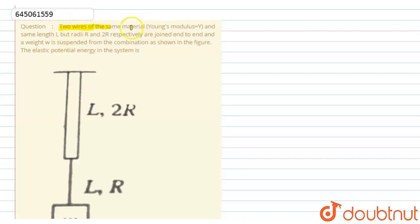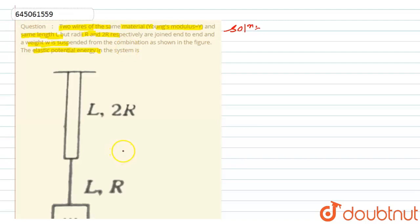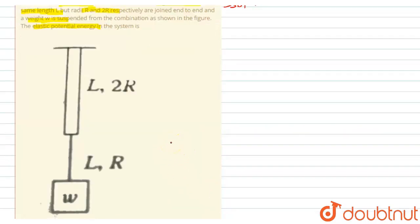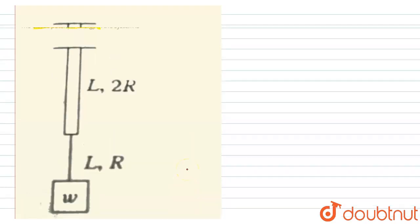In this question, we have two wires of the same material — Young's modulus Y — and same length L, but with radii r and 2r respectively. They are joined end to end, and a weight W is suspended from the combination as shown in the figure. We need to find the elastic potential energy of the system.